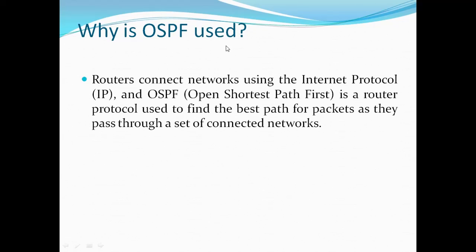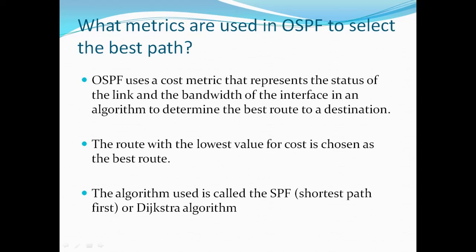So why is OSPF used? We all know that routers connect networks using IP addresses. OSPF, Open Shortest Path First, is a router protocol used to find the best path for packets as they pass through a set of connected networks. Next, what metrics are used in OSPF to select the best path? OSPF uses a cost metric that represents the status of the link and the bandwidth of the interface.